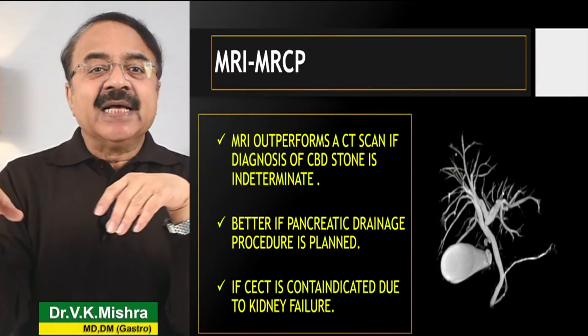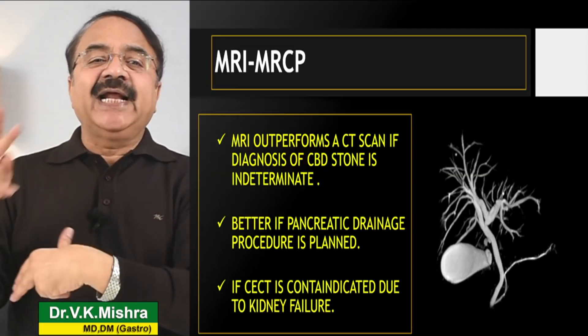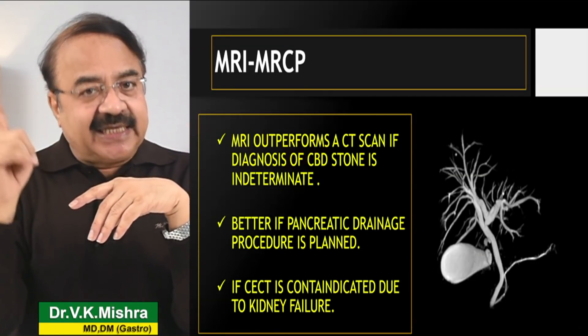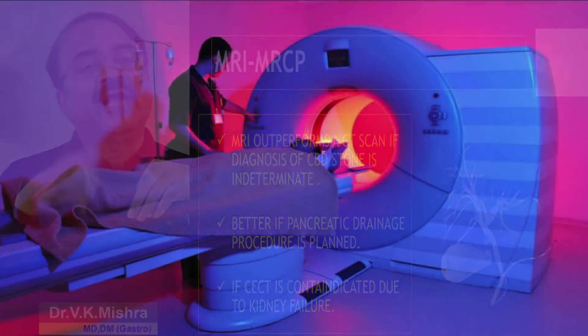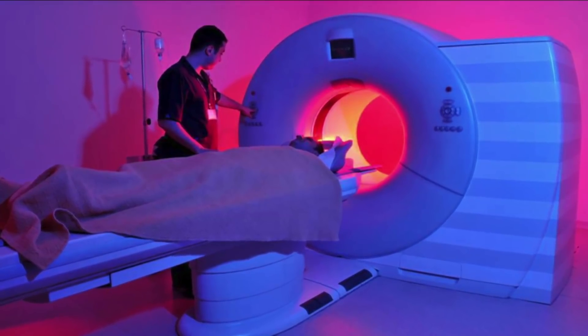क्या MRI/MRCP की ज़रूरत पड़ती है? CT scan is the modality of choice, but MRI कुछ areas में outperform करता है. अगर kidney function deranged है और kidney failure की वजह से CT scan नहीं किया जा सकता, तो MRI is the option — क्योंकि kidney failure से MRI में फर्क नहीं पड़ता.